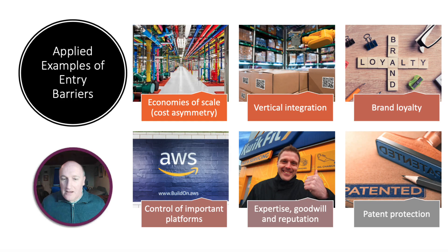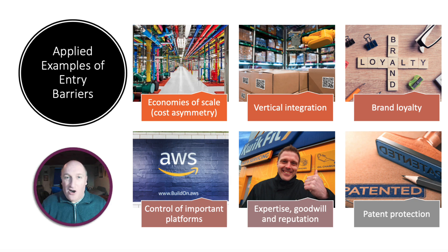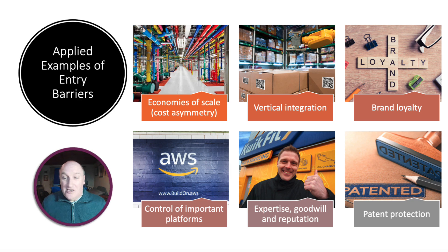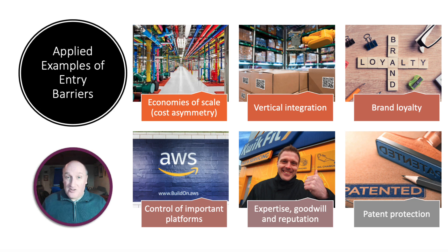One or two other barriers to entry. Control of platforms — if you've got that vertical integration — Amazon Web Services, for example, is one of the most profitable platform businesses in the world, and Amazon has incredible control over lots of things. Expertise, goodwill and reputation are super important — don't underestimate that as a barrier to entry. And because we have legal protections as well — trademarks, copyright, patents — it's particularly important in oligopoly to have patented products to protect the property rights of your innovative process or product.